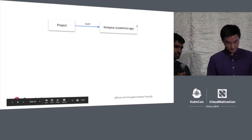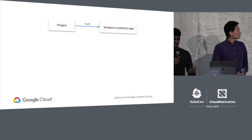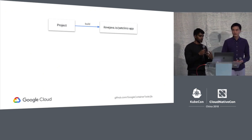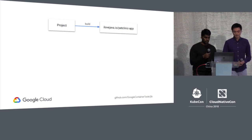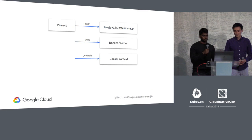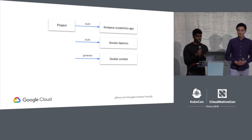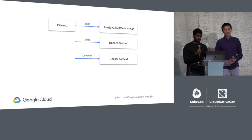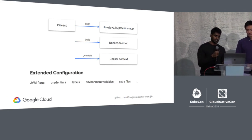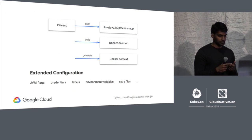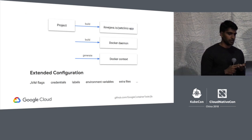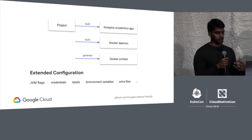In that demo, we took a project, did a Jib build, and ended up with a container image on the container registry without needing Docker. That's what we want Jib to be used for primarily. However, some of you might still have Docker infrastructure. If you want to build to a Docker daemon, Jib gives you that option. You can also export a Docker context — a Dockerfile with all accompanying application files — into a directory to run the Docker build yourself. For advanced configuration, you can set JVM flags, credential settings, labels, environment variables, and even extra non-application files.